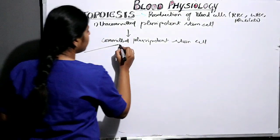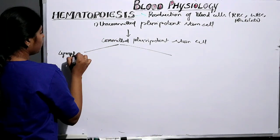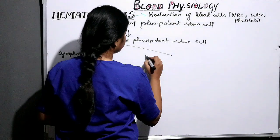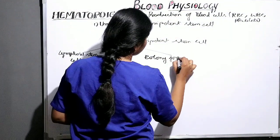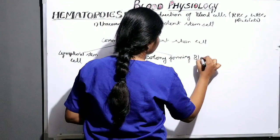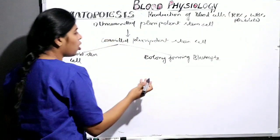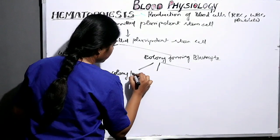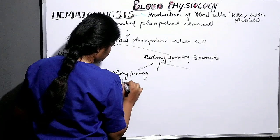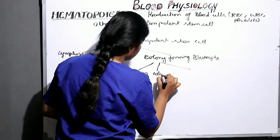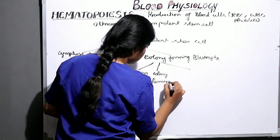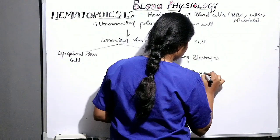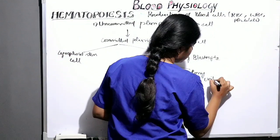Then it is further divided into two types: the lymphoid stem cell and the colony forming blastocyte. In colony forming blastocyte, it is further divided into three types: colony forming unit E, colony forming unit GM, and colony forming unit EM.